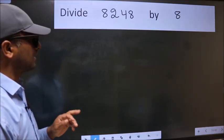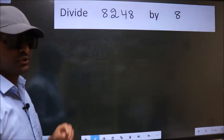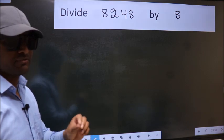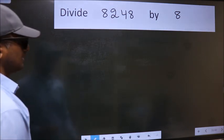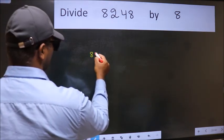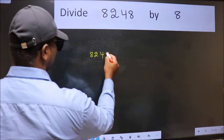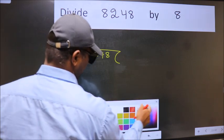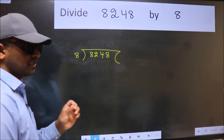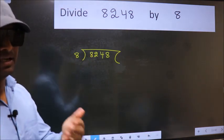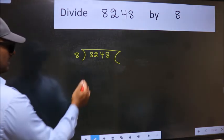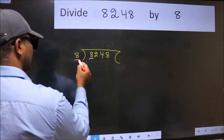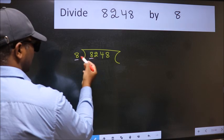Divide 8248 by 8. To do this division, we should frame it in this way: 8248 here, 8 here. This is your step one. Next, here we have 8 and here 8. When do we get 8 in the 8 table?